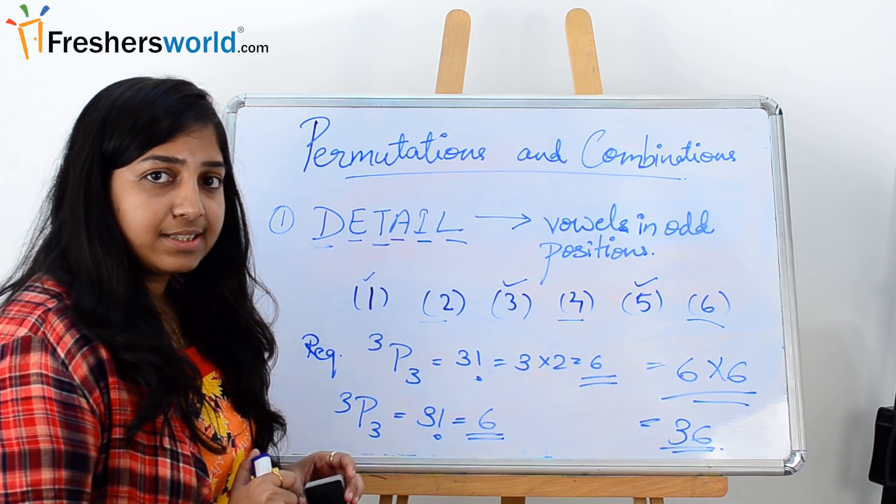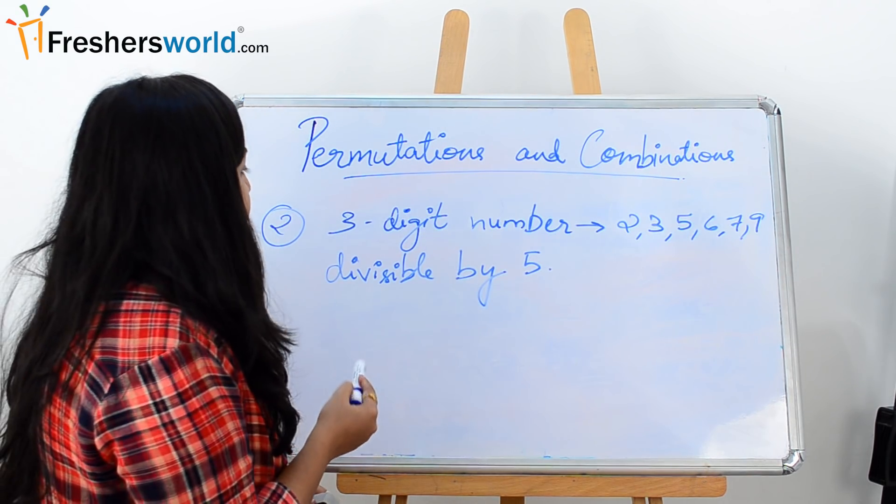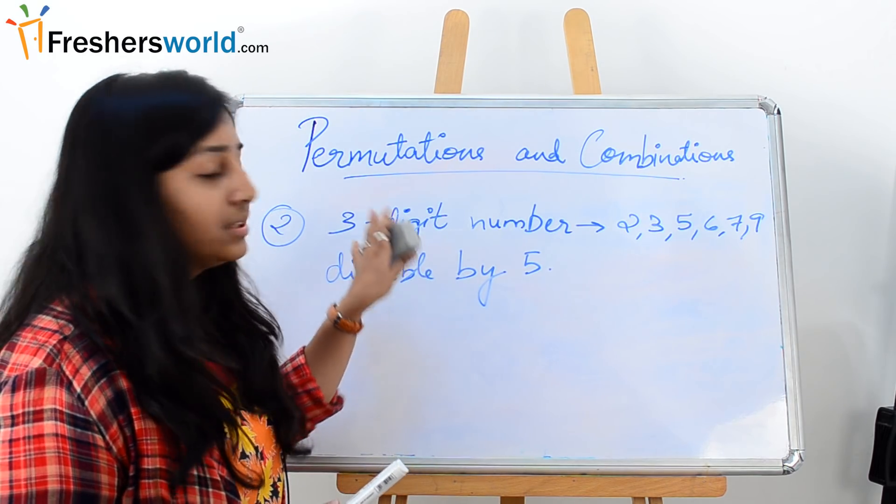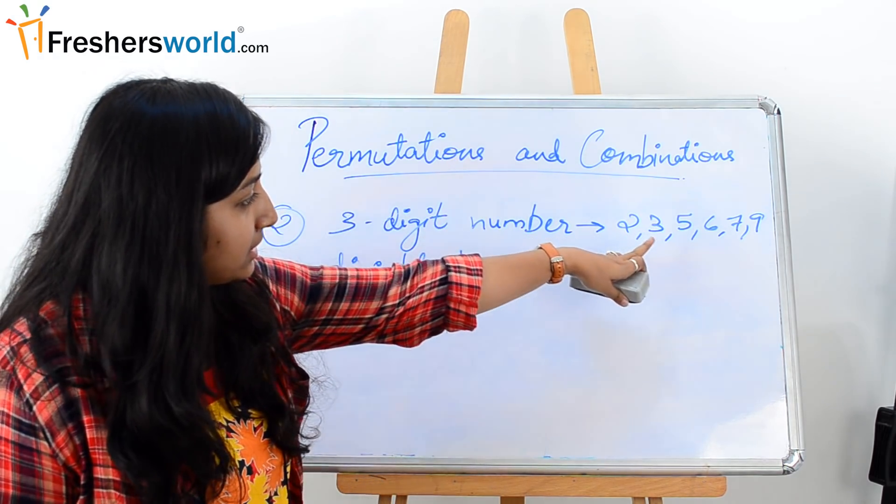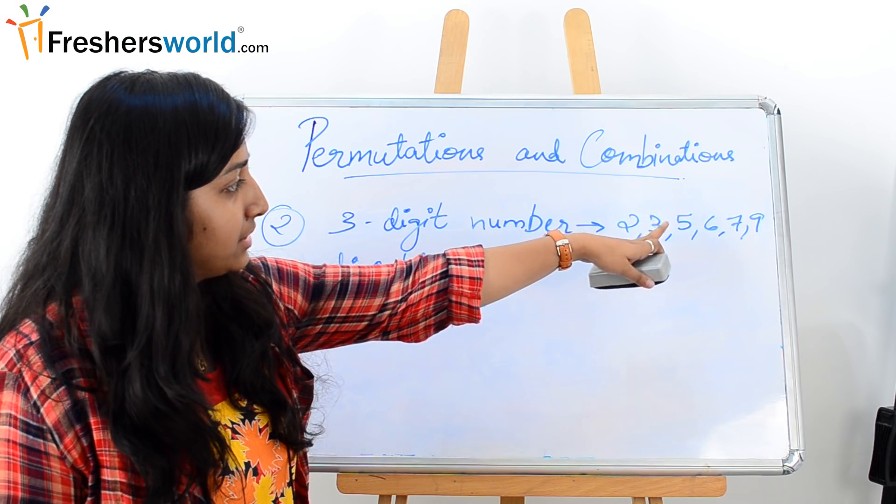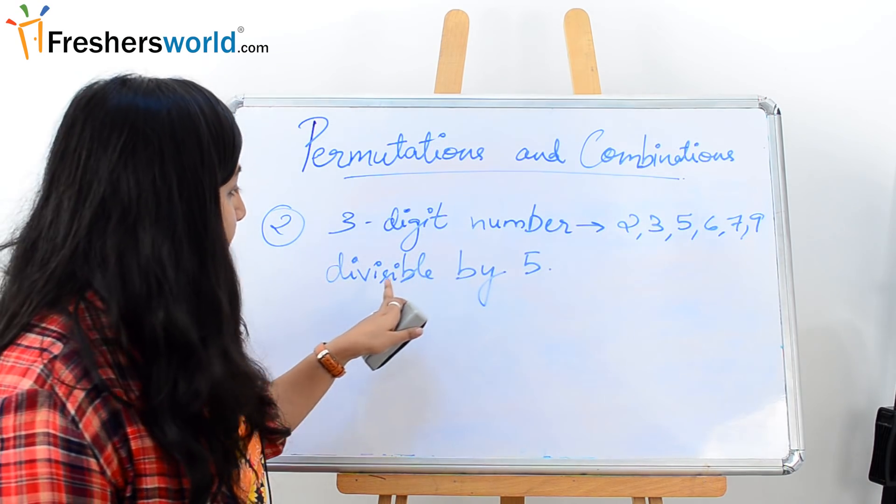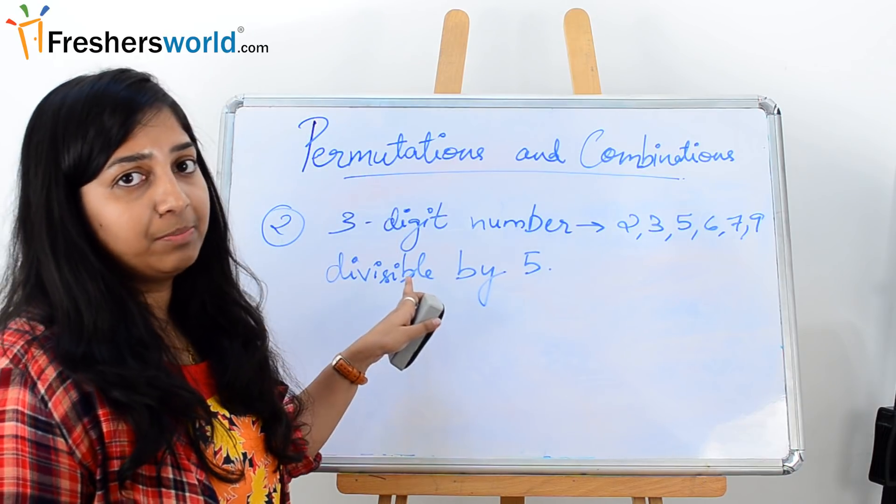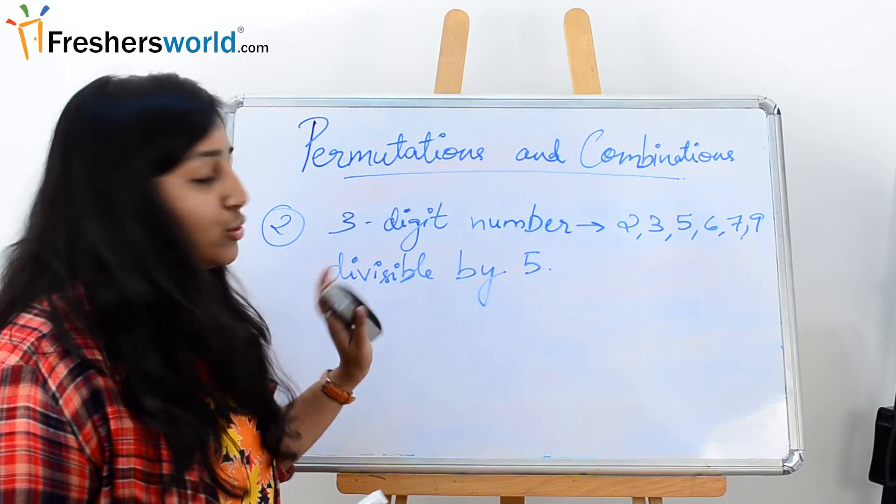Let's go for the second example. The next question is: how many three-digit numbers can be created out of these numbers, that is 2, 3, 5, 6, 7, and 9, such that the number is divisible by 5 and no digit is repeated in the number. So let's start.